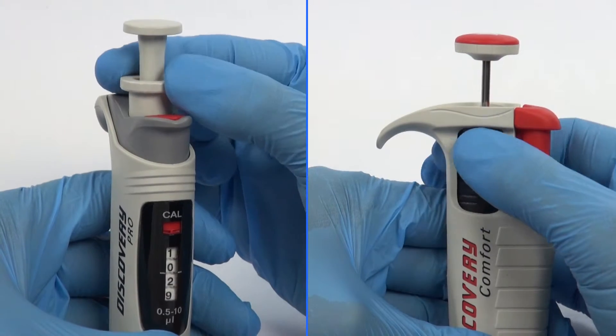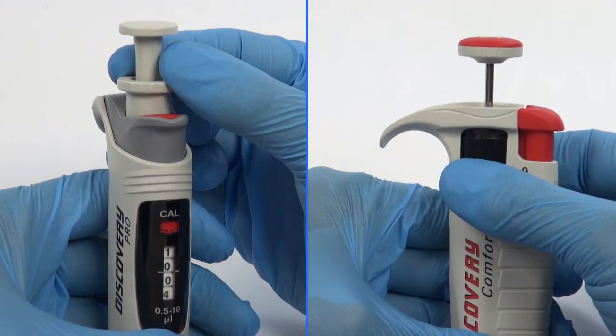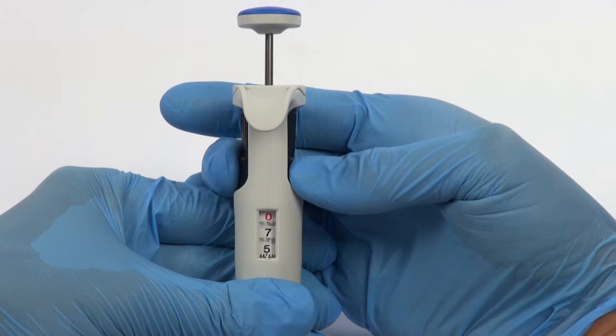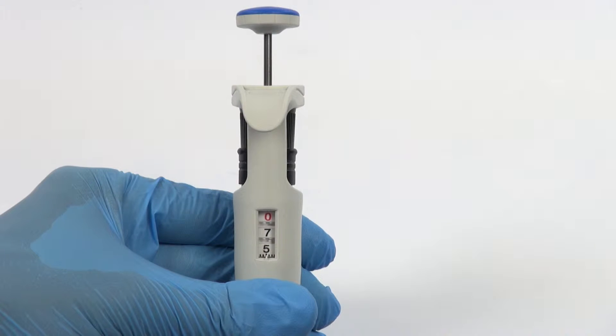Additionally, Discovery Comfort and Discovery Pro pipettes are equipped with a volume lock mechanism. The volume shown on the counter is represented by 3 or 4 digits, which should be read from top to bottom.